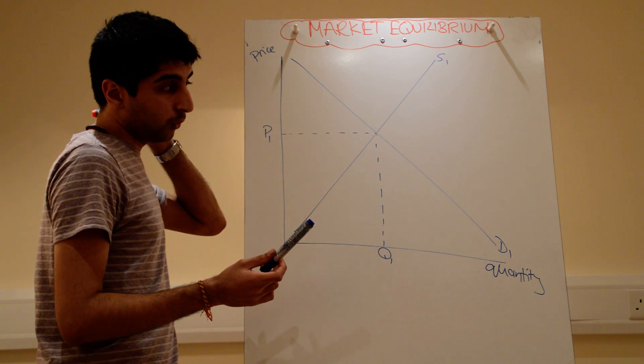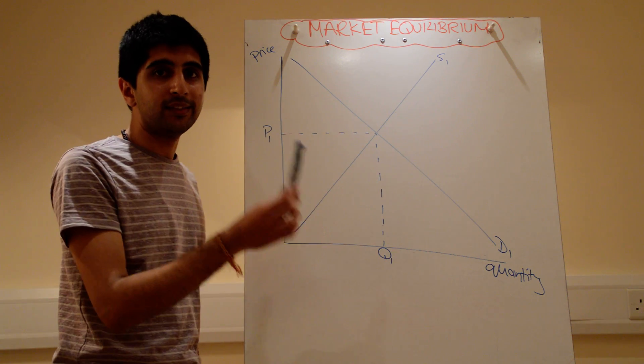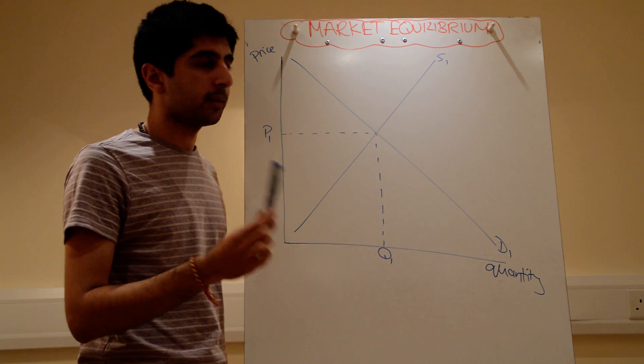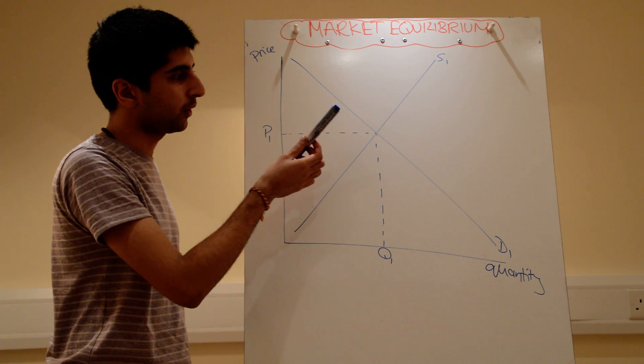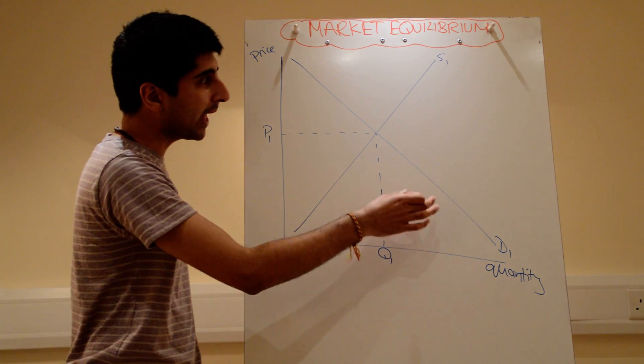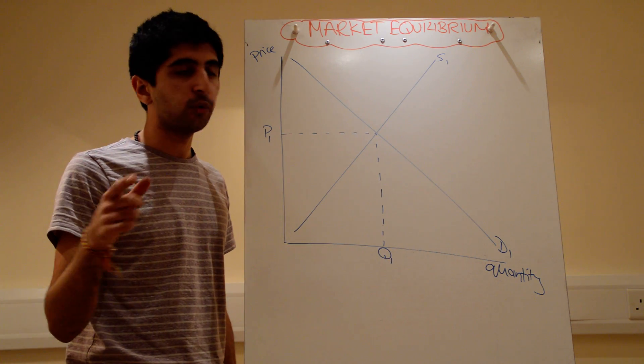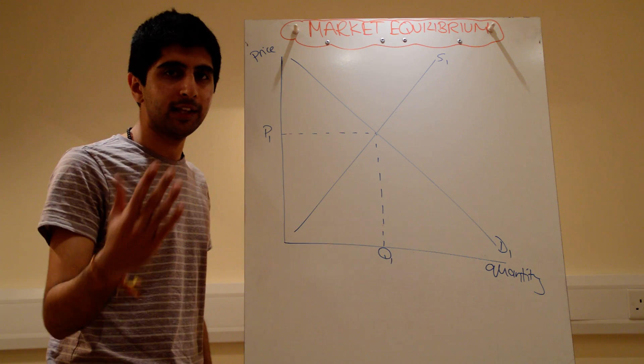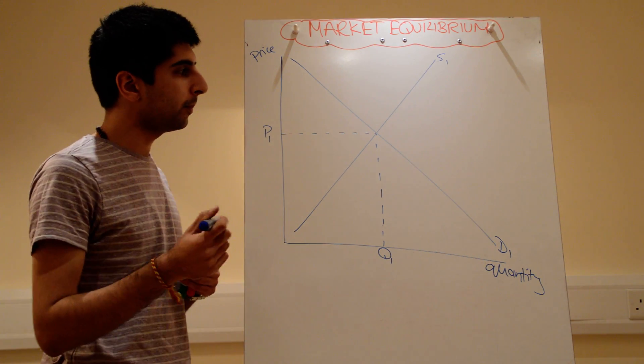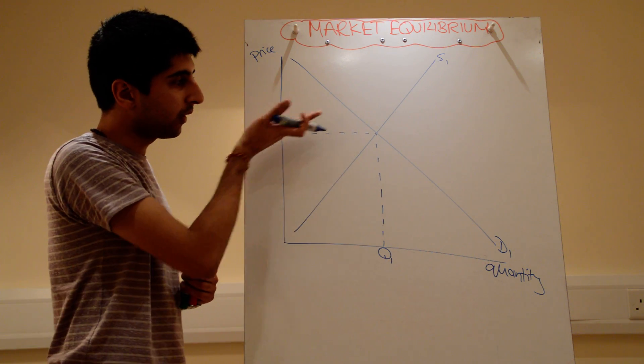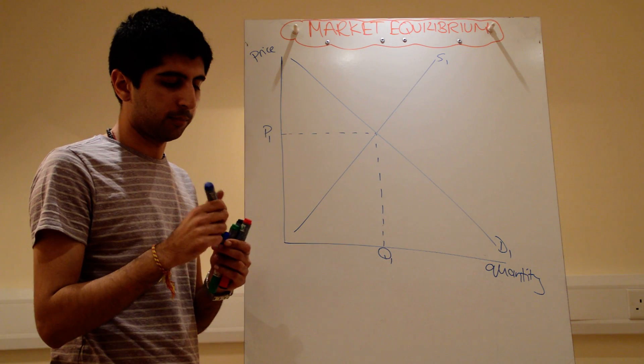To understand why P1 and Q1 is the equilibrium price, is the market clearing price, we need to kind of go against this. So I'm telling you now, where demand equals supply, that's a definition of equilibrium, also known as market clearing price. Well, to understand why, let's go against that. Let's pick two points above and below the current price level, the equilibrium price level, to understand why that can't be equilibrium.